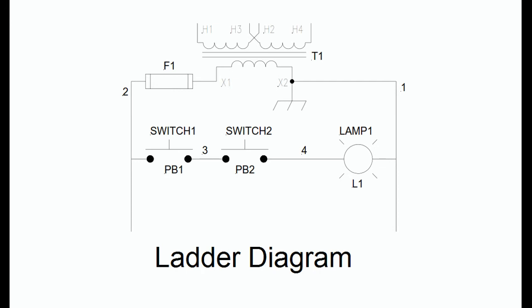The controlling devices, in this case the switches, are always positioned on the left side of the rung, and the controlled devices, in this case the lamp, are always positioned on the right side of the rung. This wiring scheme is also done for safety reasons.